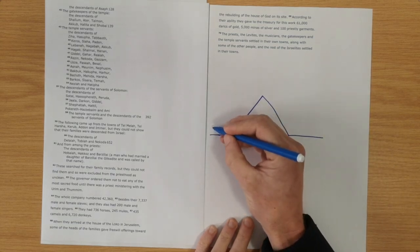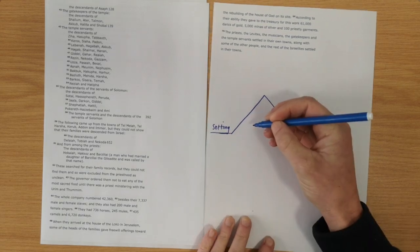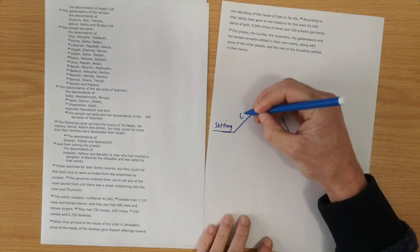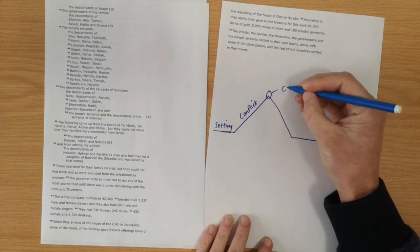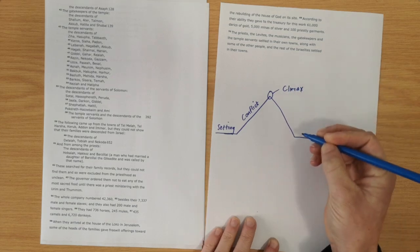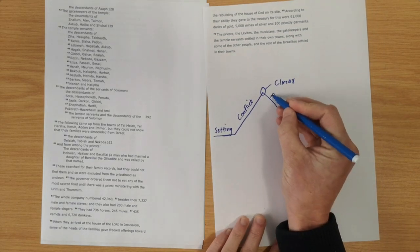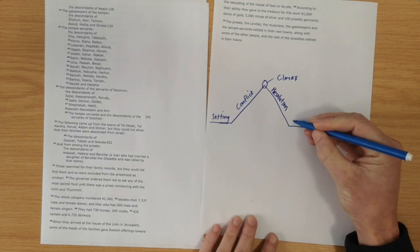And what you're looking for when using this tool is the setting. You're looking for the conflict that is set up in the story. Right at the top, you're looking for your point of climax, the climax of the story. Then you see how from that point, the story resolves. And then you're given a new setting.